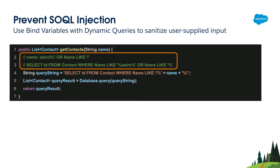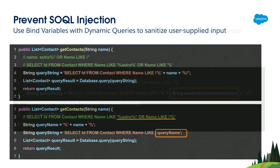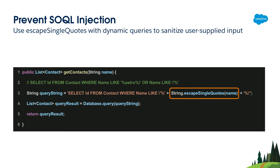The way to sanitize user input is to use bind variables. Bind variables remove the single quote as a database command, making it act as a plain string instead. You should use bind variables with your dynamic queries whenever you have user input to prevent SOQL injection. In cases where you can't use bind variables, you can use the escapeSingleQuotes method instead, which does the same thing.